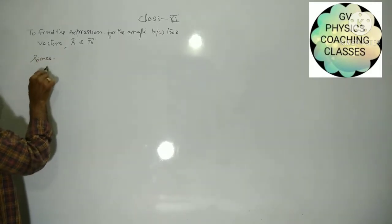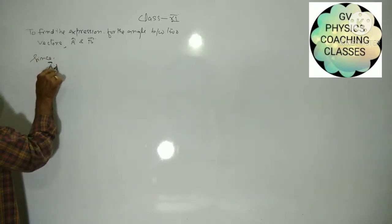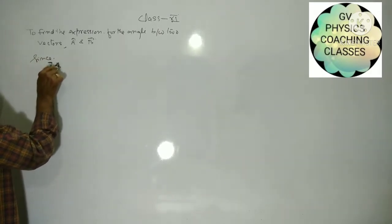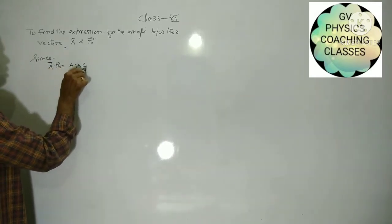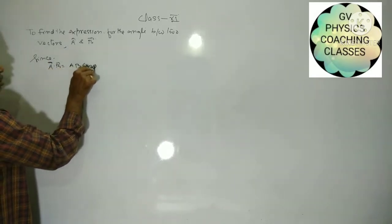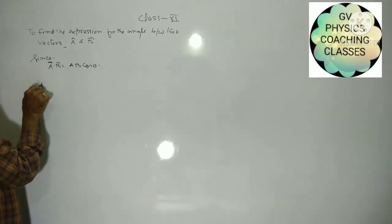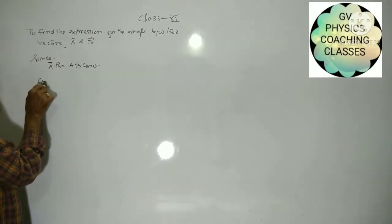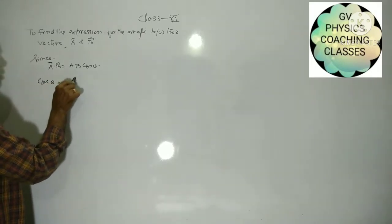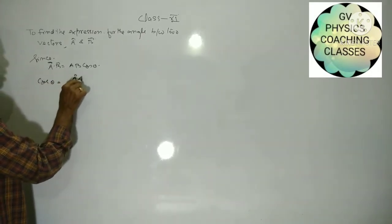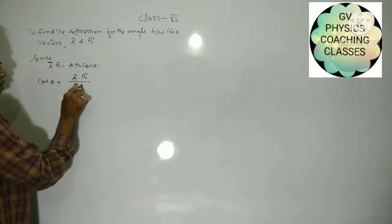Since vector A dot vector B equals AB cosθ, and cosθ equals vector A dot vector B upon AB.